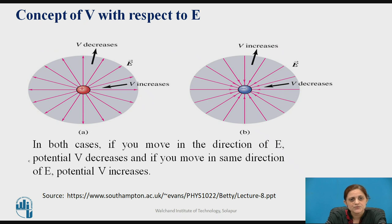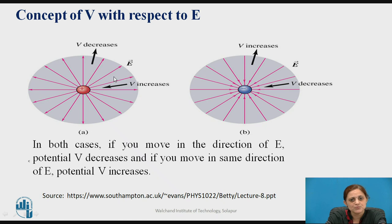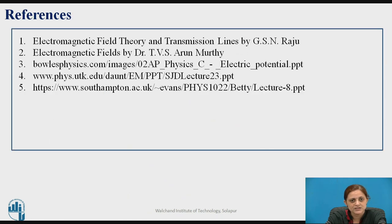Now, the concept of V, that is electric potential, with respect to electric field: if you want to move the charge Q from one position to another in the presence of the electric field intensity — shown as the red lines representing the electric field intensity — in both figures, if you move in the direction of E, the potential V decreases.